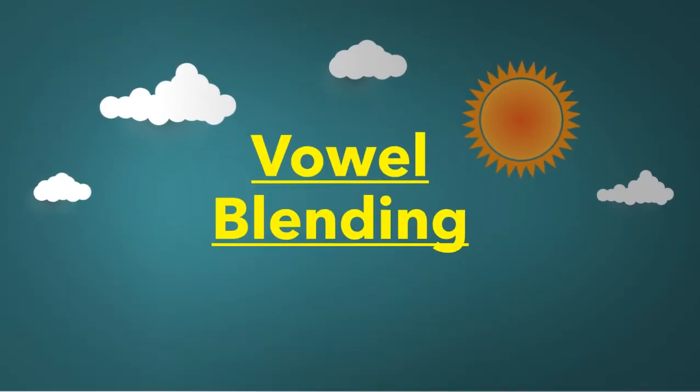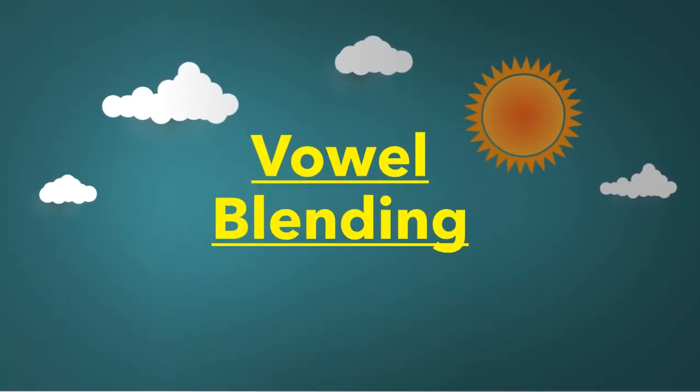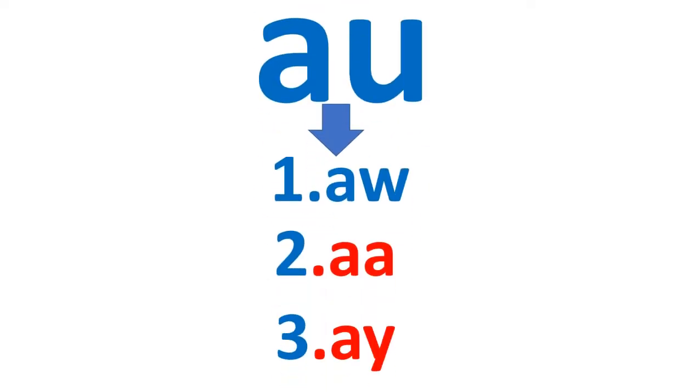In vowel blending, we are going to learn the AU vowel blend, so let's start. AU vowel blend has three sounds: the first one is 'aw', the second one is 'aa', and the third one is 'ay'. But from these three sounds, you can find the 'aw' sound in most of the words. Let's practice all these three sounds.